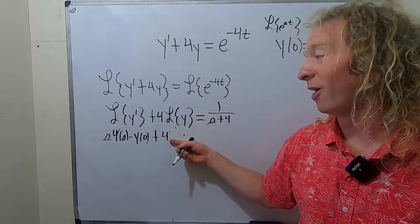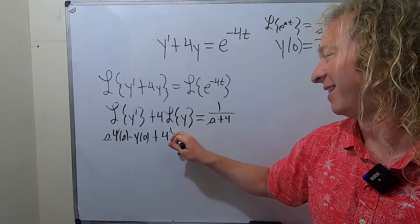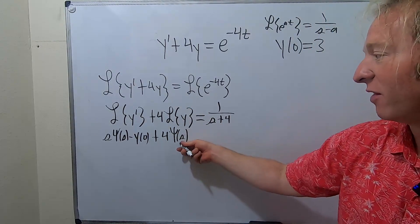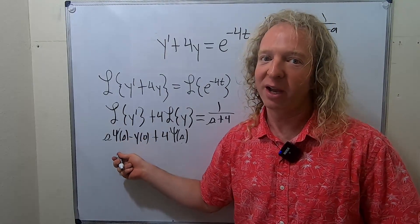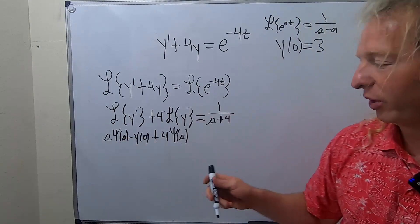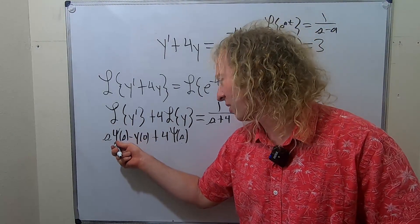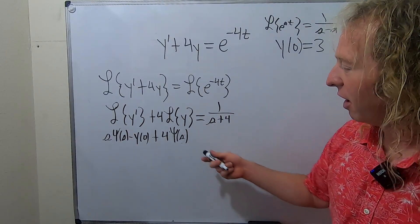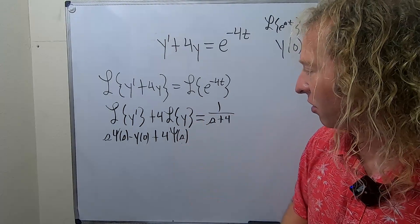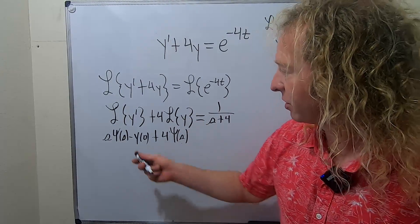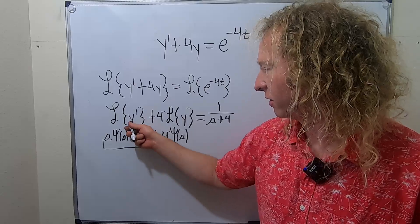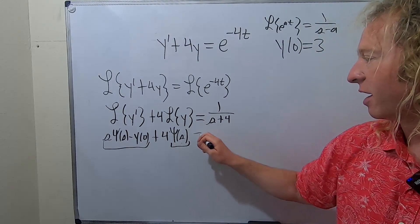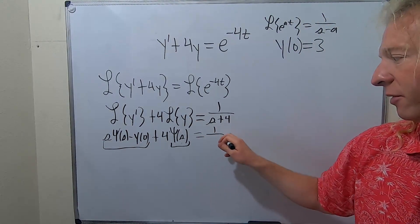The Laplace of y is ψ(s). You could write Laplace of y each time, but it gets messy, so I like to rename it and call it psi of s. So the left-hand side becomes s·ψ(s) minus y(0), plus 4·ψ(s), and this equals 1 over s plus 4.